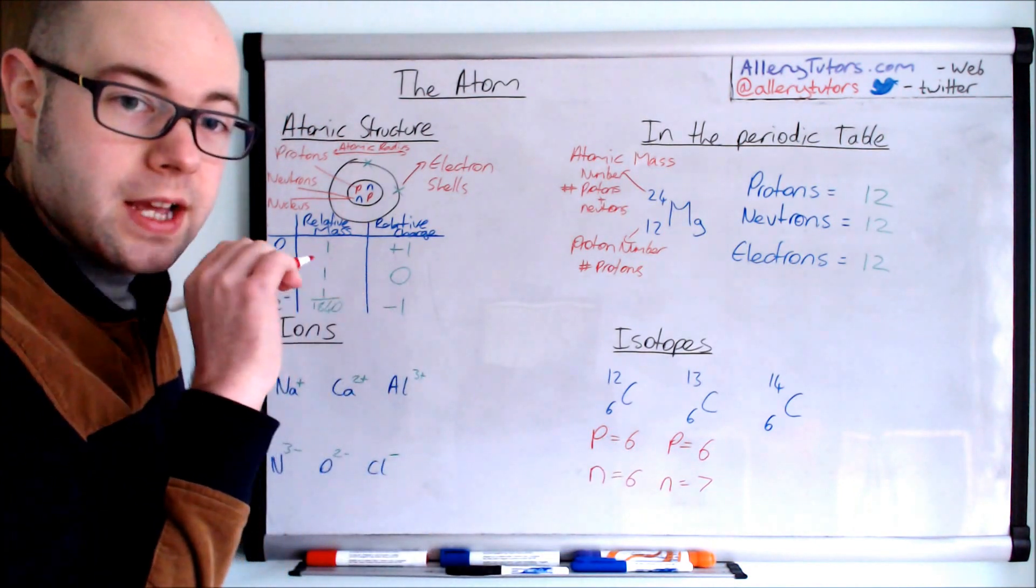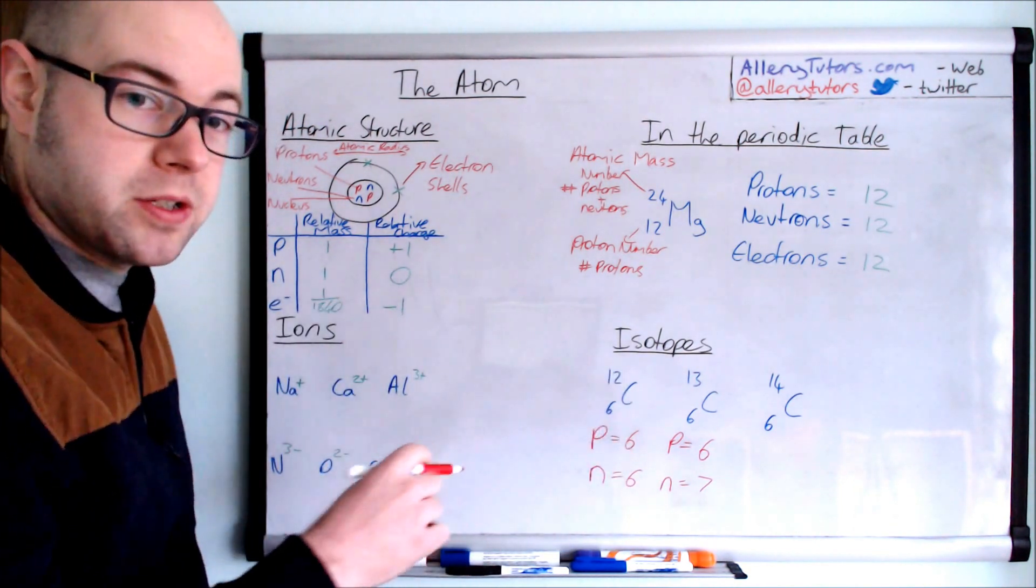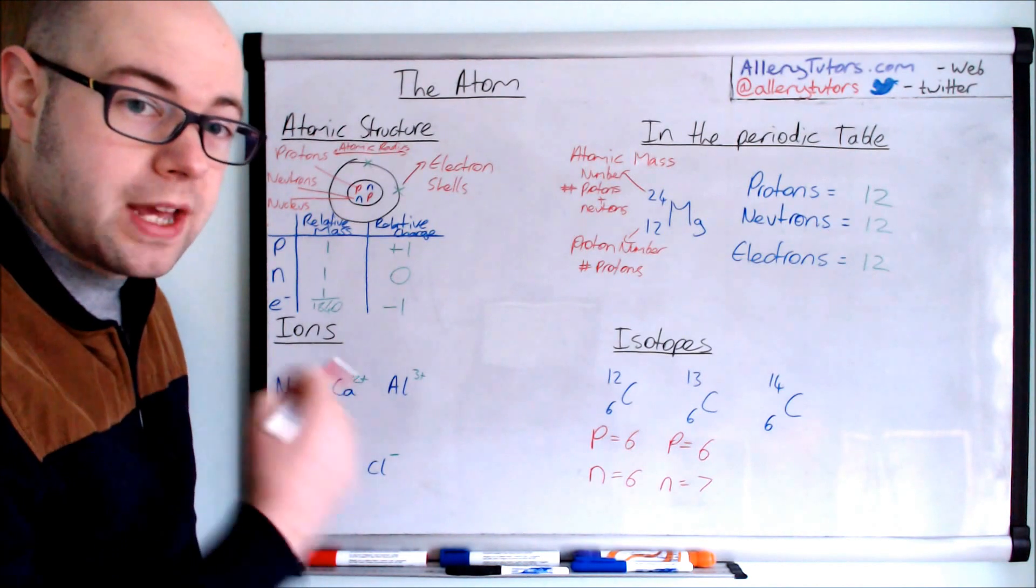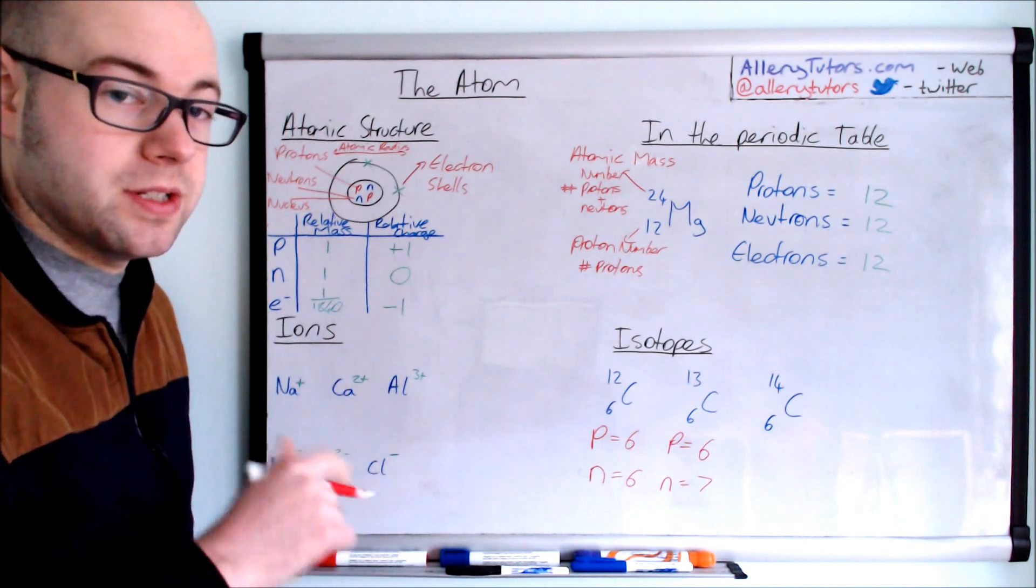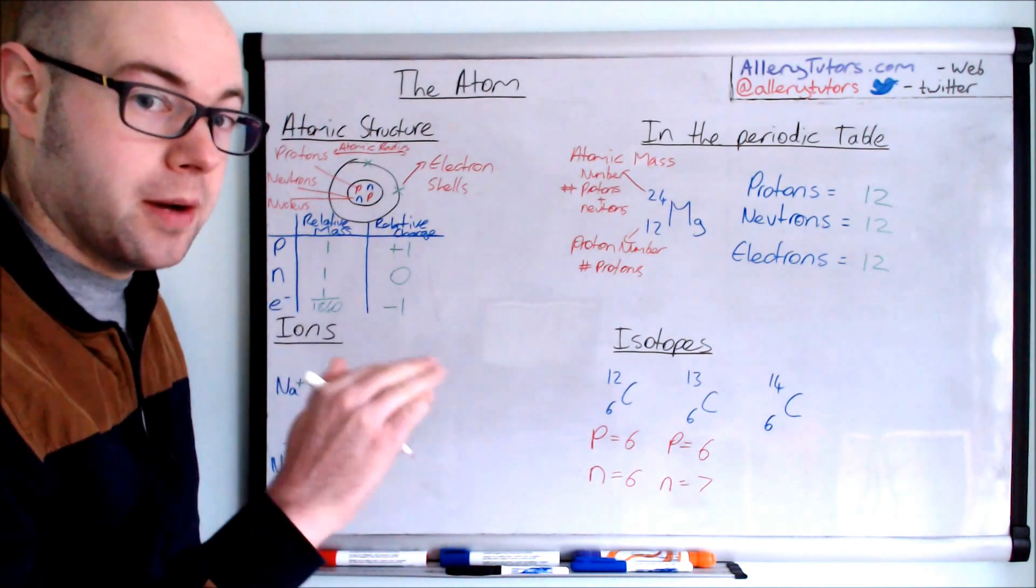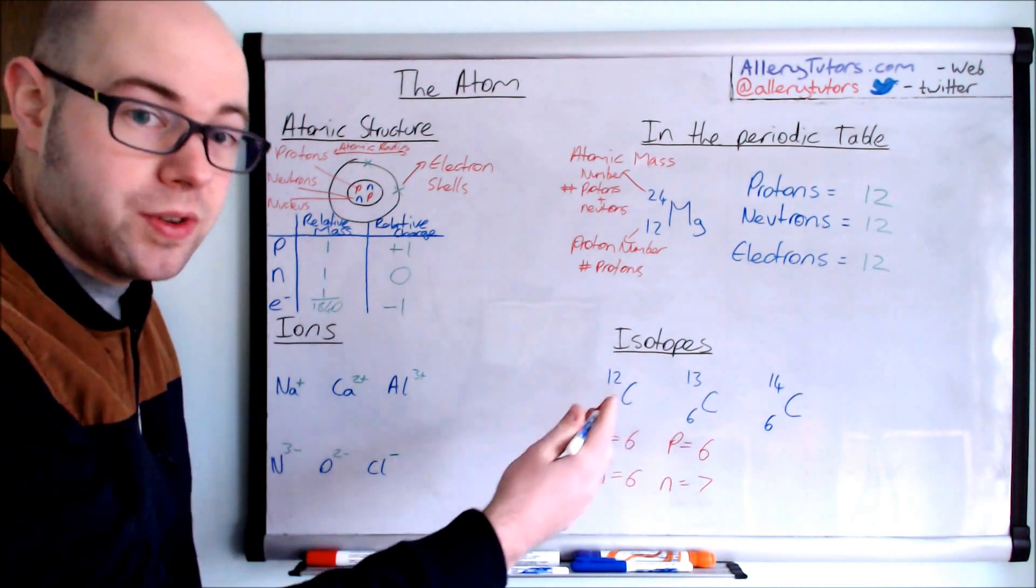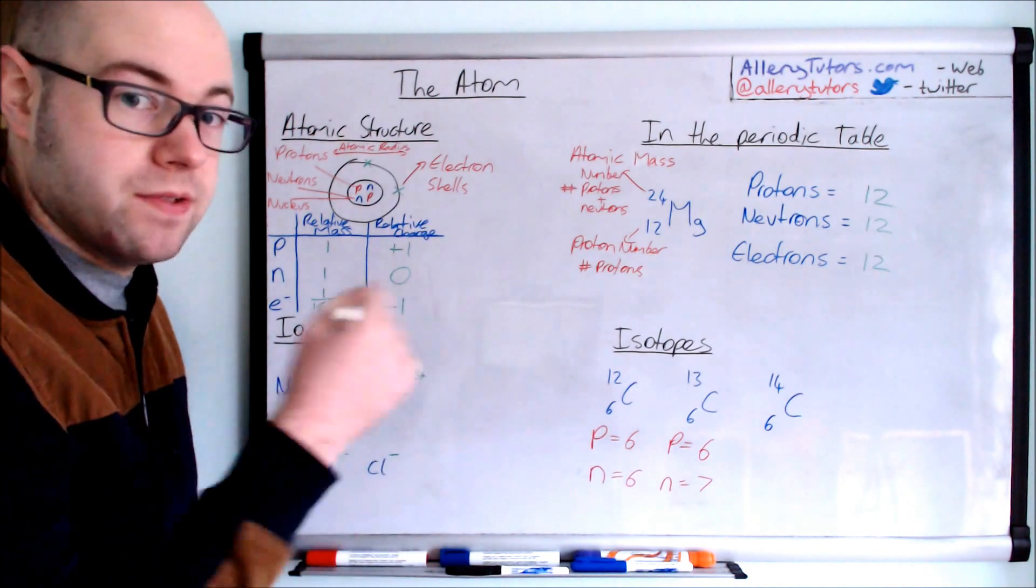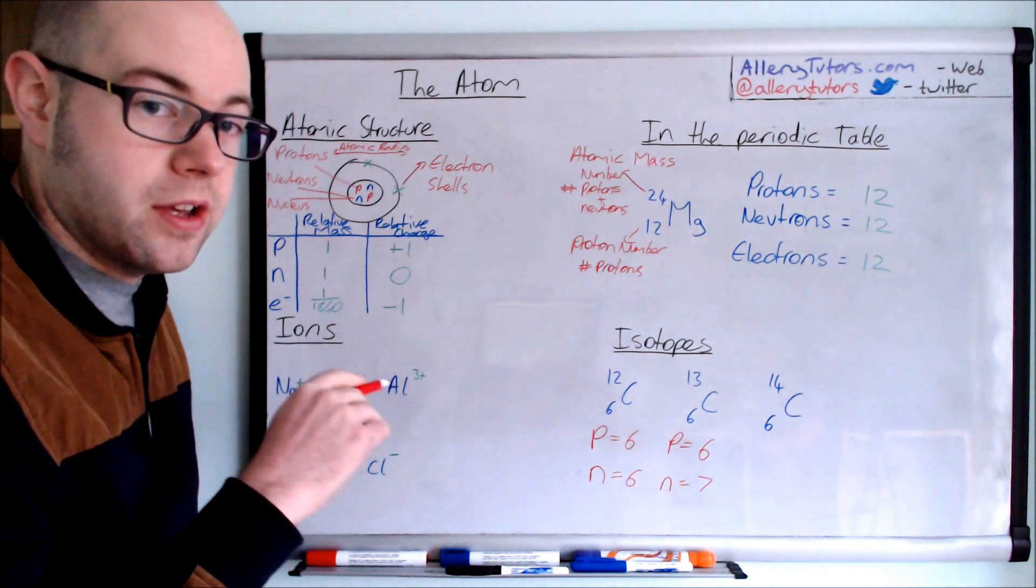The proton number, this one at the bottom, is unique to carbon. No other elements will have six protons. It's like a barcode for the atom. So wherever you see six protons, it has to be carbon. It might have a different mass number on the top. This is because of a difference in the number of neutrons and nothing else.